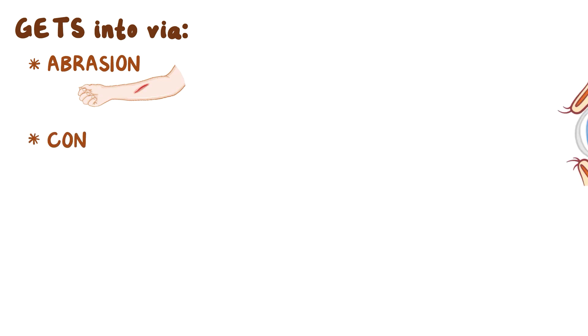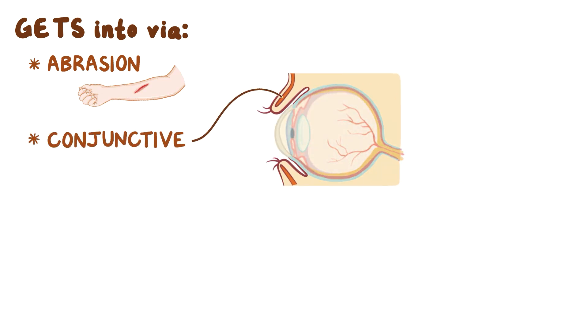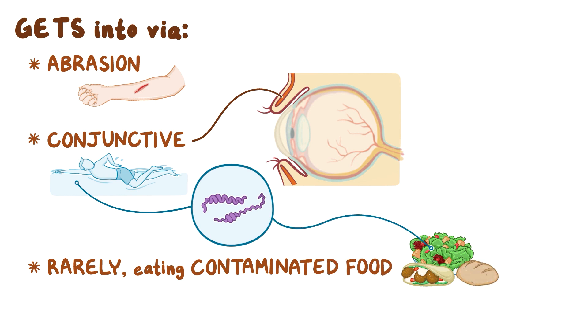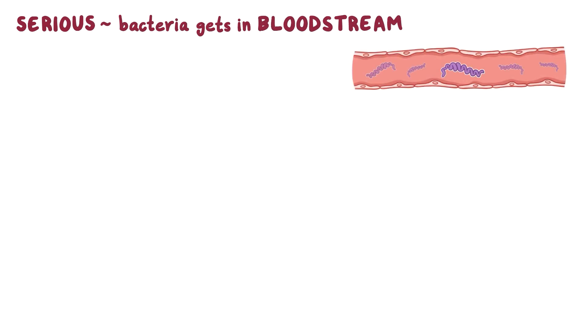Most commonly, leptospira gets into the host system by abrasions or cuts on the skin. Alternatively, it can get in through the conjunctiva of the eyes, especially in people who go swimming in contaminated waters. And rarely, infection can also follow eating contaminated food.